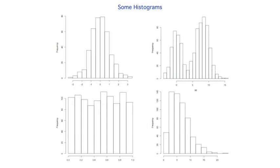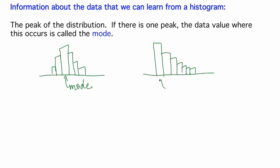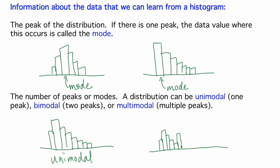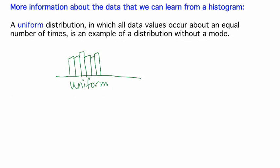Here are a few examples of the range of shapes of distributions we can see in histograms. The histograms vary by the number of peaks and whether or not they have a peak, how symmetric they are, and how long the tails are relative to each other. From a histogram, we can get lots of information about the data. We can learn the peak of the distribution. If there is one peak, where it occurs is called the mode, corresponding to the most common bin of data values. A distribution can be unimodal, meaning it has one peak, or bimodal, having two peaks, or multimodal, having multiple peaks. A uniform distribution, in which all data values occur about an equal number of times, is an example of a distribution without a mode.